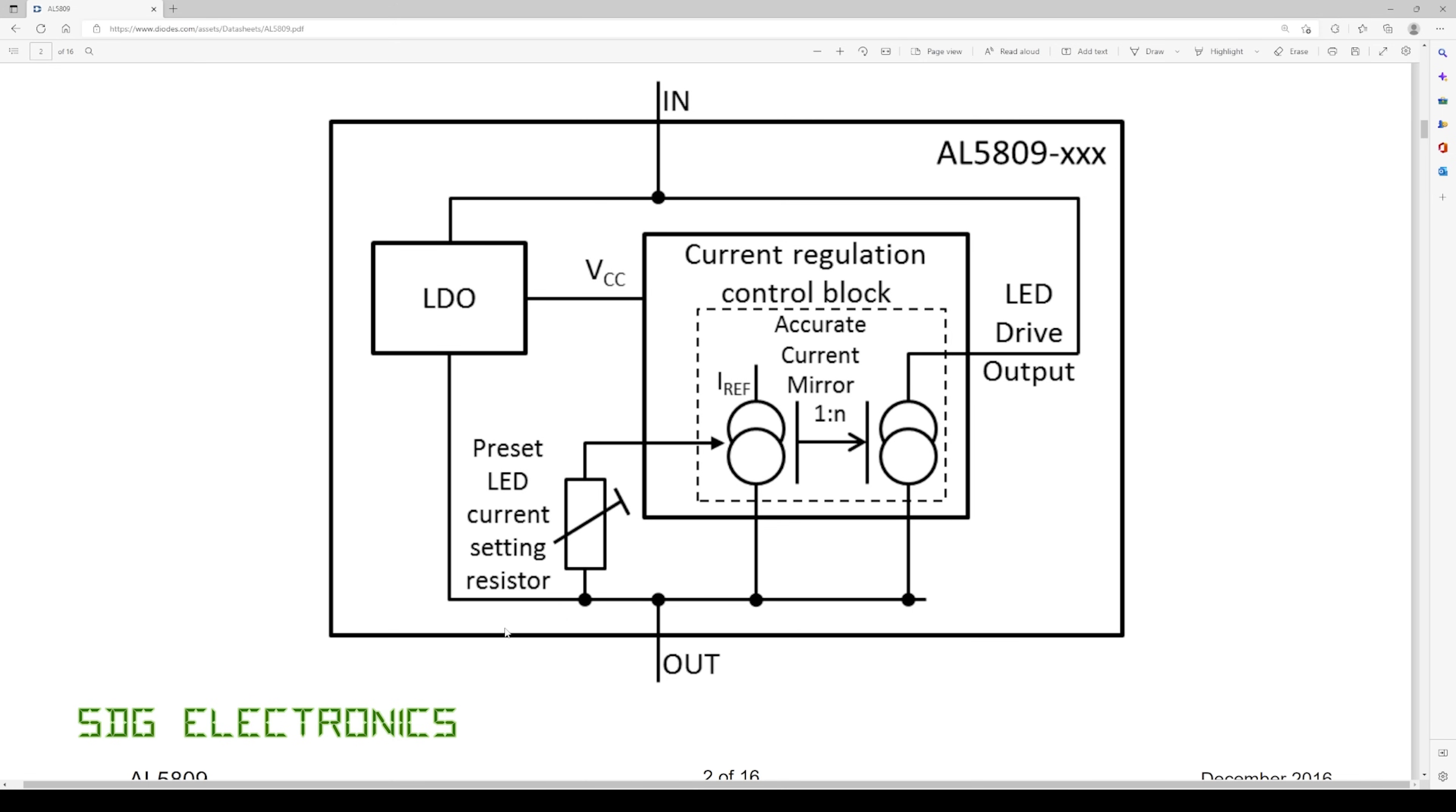So the internal diagram looks like this. We've got an LDO which basically is our reference. We've got a current mirror and a current setting resistor and this resistor was built into the device and you pick a particular part number which basically just changes the resistor here to change the constant current.